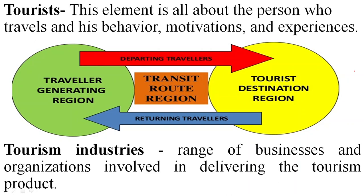Let's understand each element one by one. First, the tourist — the person who travels. When studying a person, we talk about behavior: how they buy, where they buy, whether they are price-conscious or quality-conscious. We also consider motivation factors — what are they seeking? There are different theories of travel motivations, such as psychocentric, allocentric, wanderlust, and sunlust.